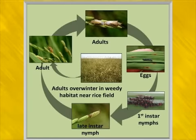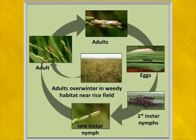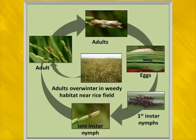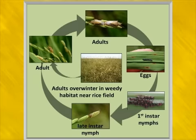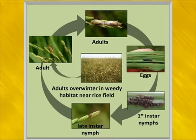Nymphs emerge from the egg as the first instar. They pop out of the egg capsule and start moving around on the plant. From the first instar stage all the way through to the adult stage, they have the ability to damage the crop by feeding on those developing grains. They'll feed on the panicle as the grains are maturing — from flowering all the way through hard dough, they can cause injury to the crop.